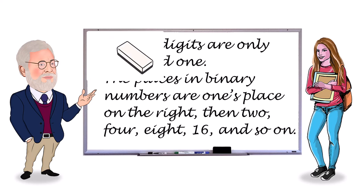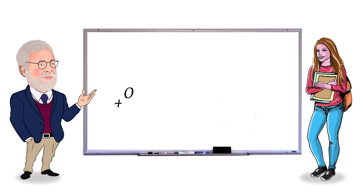Let's look at the rules for binary addition. Zero plus zero is zero, okay? Yep. Zero plus one is one. One plus zero is also one because addition is commutative. Commutative means changing the order doesn't change the result, right? That's right.